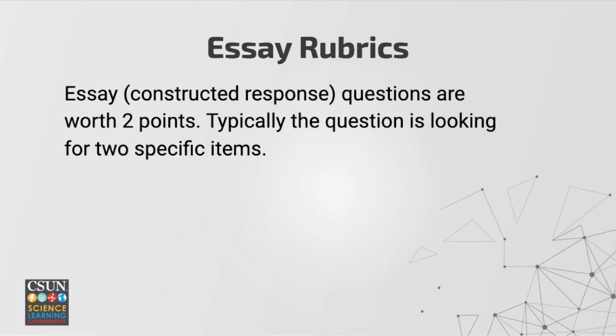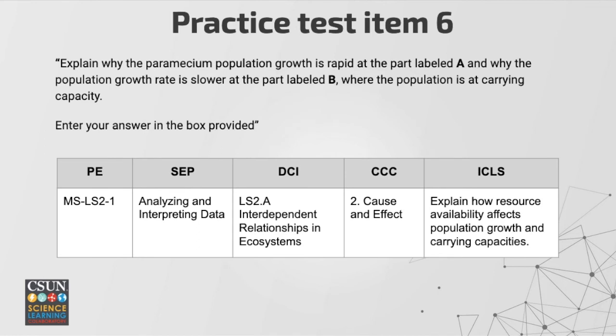As I mentioned, all questions are computer scored with the exception of essays or constructed responses, and those are scored based on a two-point rubric. All this information is located in the practice guide and the scoring documents linked earlier. Practice item six is the paramecium question we looked at before. The scoring guide gives information about what is being assessed: the SEP for analyzing and interpreting data, and the cause and effect cross-cutting concept.